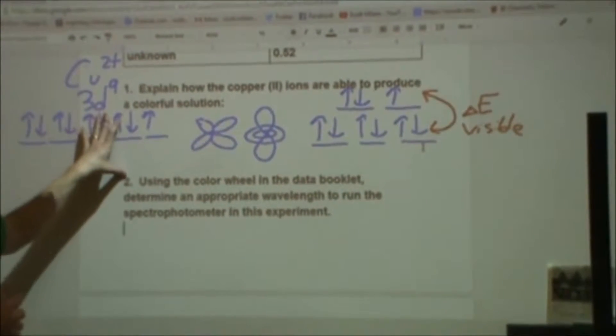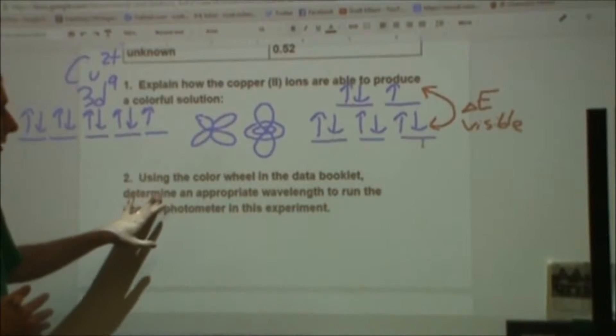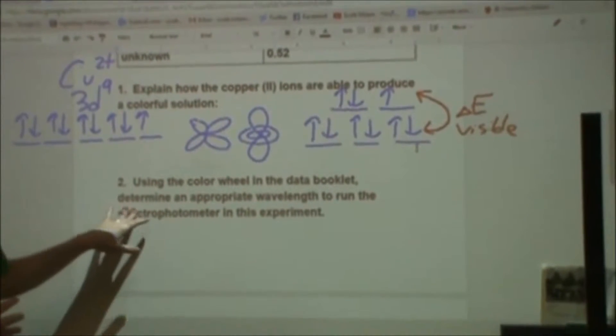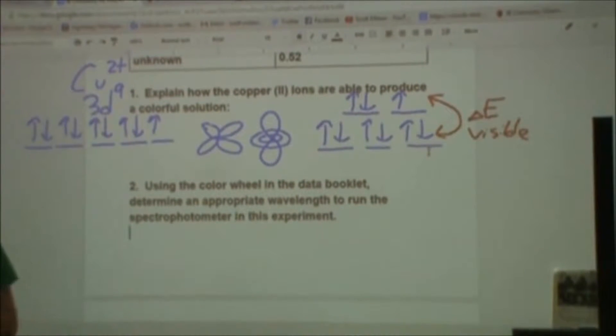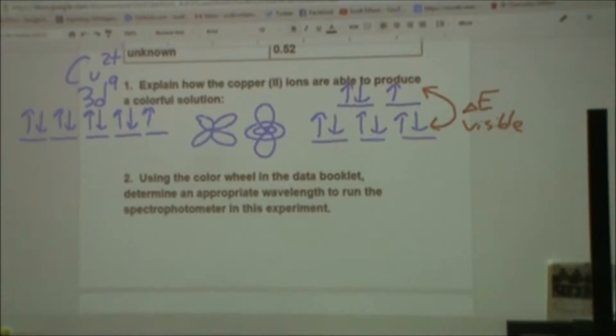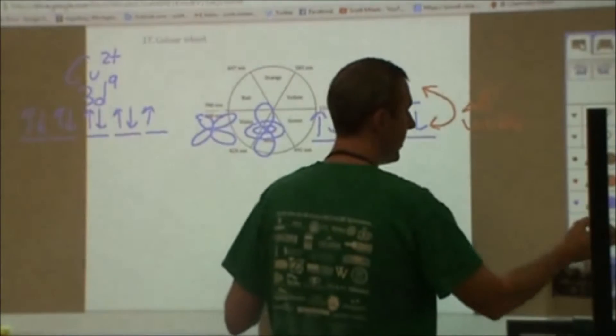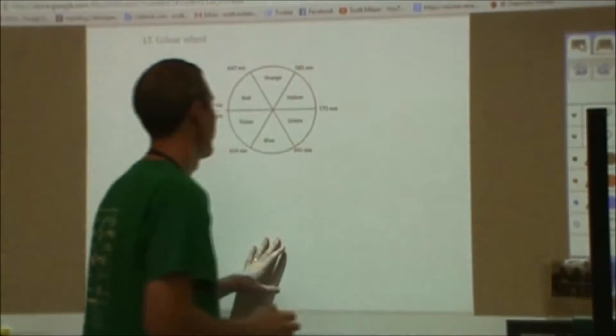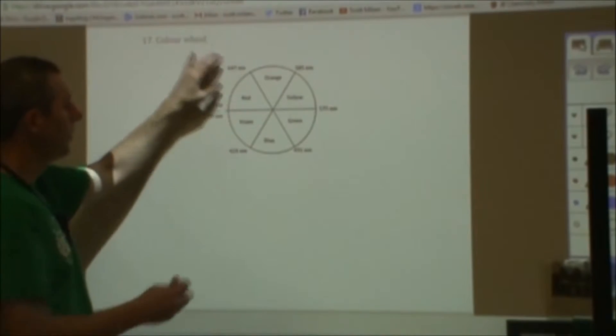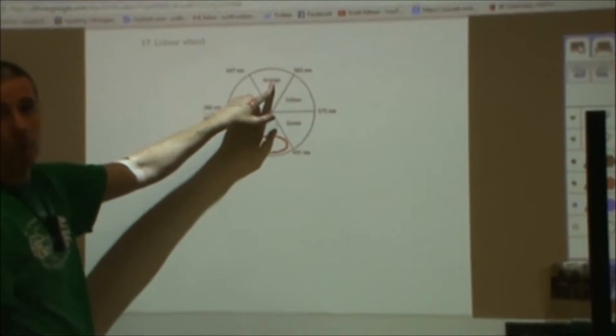In our case here, we see a blue solution. In part two, it says use the color wheel in the data booklet to figure out what wavelength we should be running. That's asking which wavelength is getting absorbed. If we go to the IB data booklet, we see that blue is complementary to orange.